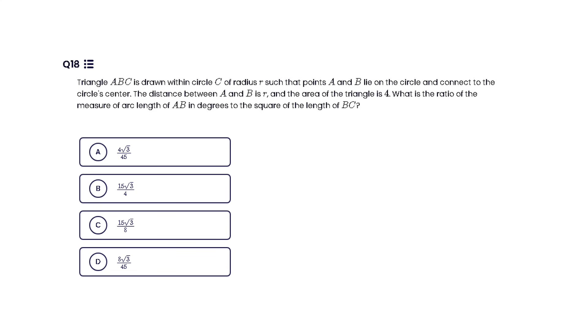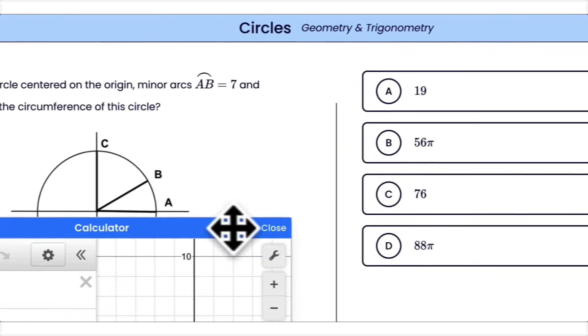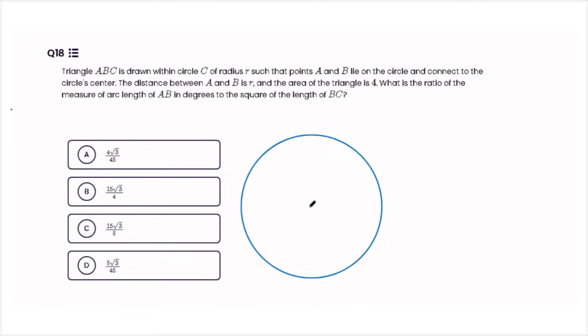This question actually comes from Cracked's new challenge mode, where they developed multiple questions that are on par with Math Module 2. On top of that, Cracked also has one-on-one tutoring with top scores and mock exams for you to practice with. If you're interested, I've left a link in the description down below if you want to check them out. Triangle ABC is drawn within circle C of radius R such that points A and B lie on the circle and connect to the circle center. The distance between A and B is R, and the area of the triangle is 4. What is the ratio of the measure of arc length of AB in degrees to the square of the length of BC?